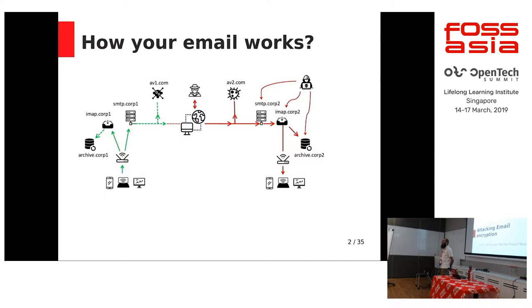Then it goes to SMTP Corp 2, the recipient's server, and then goes through the same path to the device of your friend or whoever you are sending the email to. If you look at the entire email path from sender to receiver, there is only a small part actually under your control and only a small part you can say is trusted. Everything else, once it goes out on the internet, is not trusted at all.